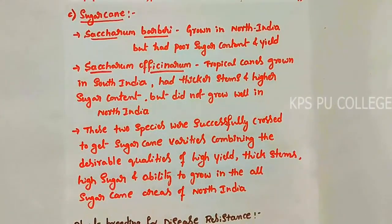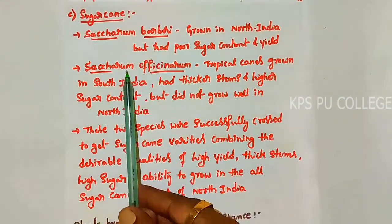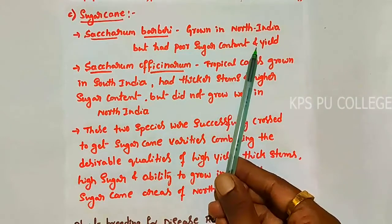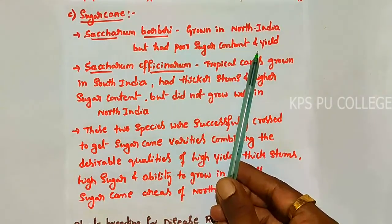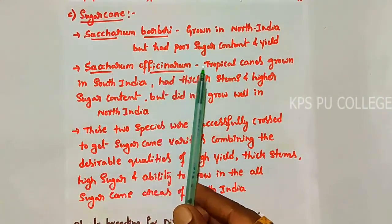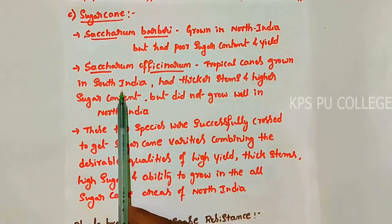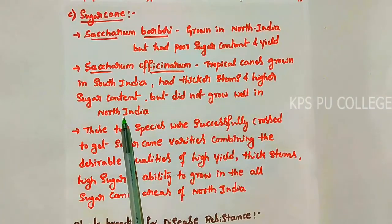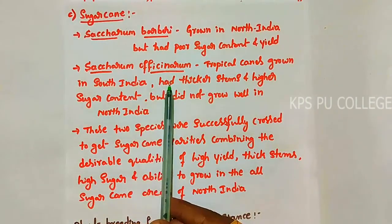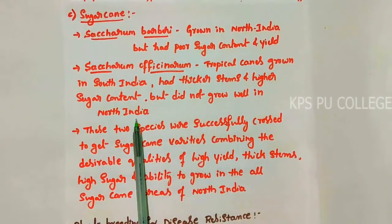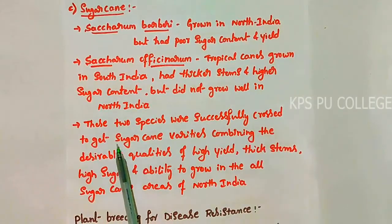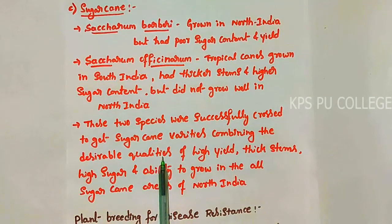For sugarcane, we have two varieties. Saccharum barberi, grown in North India, had poor sugar content and poor yield. Saccharum officinarum, the tropical cane grown in South India, had thicker stems and higher sugar content but did not grow well in North India. These two species were successfully crossed to get sugarcane varieties combining the desirable qualities of both.